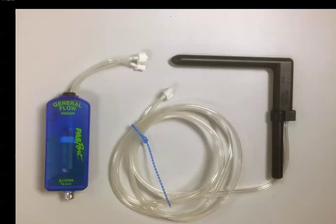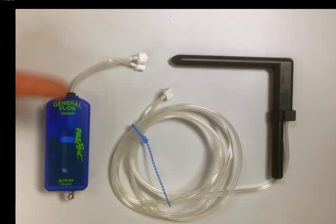This is a video showing the use of the general flow sensor with the pitot tube attachment. On the left hand side we have the general flow sensor, and at the top you can see the two ports that we have for the differential pressure.